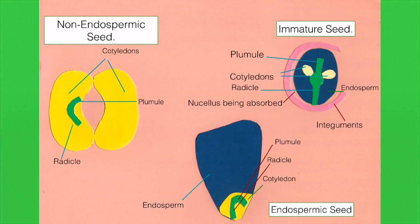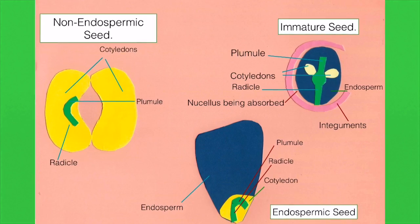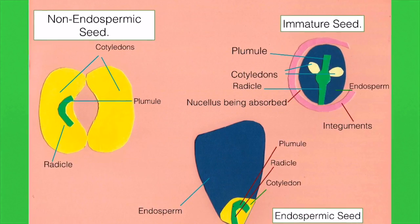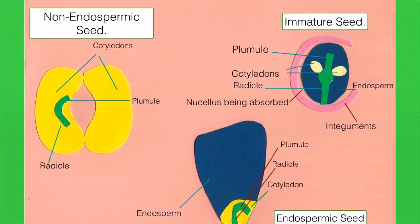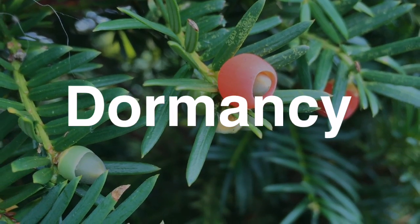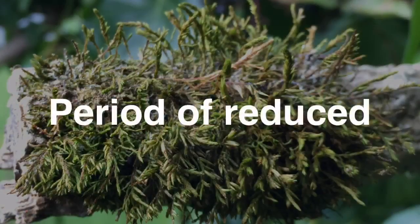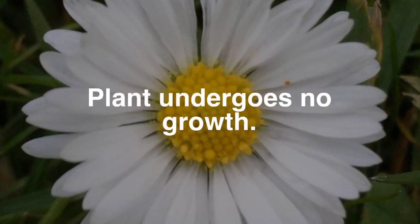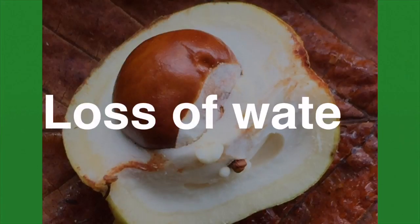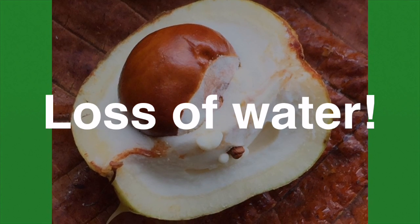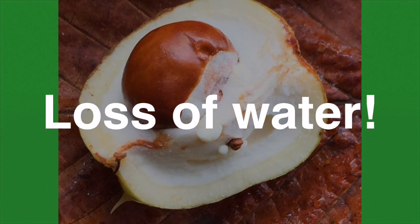However, please note there can be exceptions. Please make sure that you can label a non-endospermic seed such as the broad bean and the maize seed, which is endospermic. Mature seeds enter a period known as dormancy — a period of reduced metabolic activity where the plant undergoes no growth. Dormancy generally commences with the dehydration of the seed, with the seed losing most of its water content.